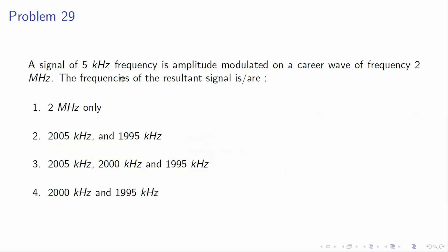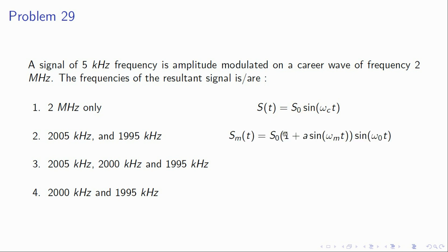Problem 29: a signal of 5 kHz undergoes amplitude modulation on a carrier wave of 2 MHz. In AM, the modulated signal contains the carrier frequency ωc, and sidebands at ωc + ωm and ωc − ωm. So the resultant signal has three frequencies: 2 MHz, 2.005 MHz, and 1.995 MHz. Option 3 is correct as it includes all three frequencies.